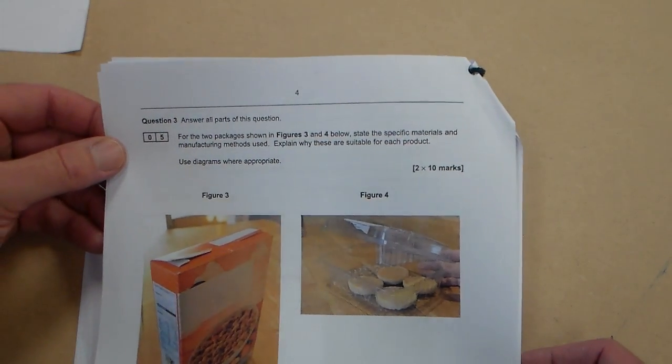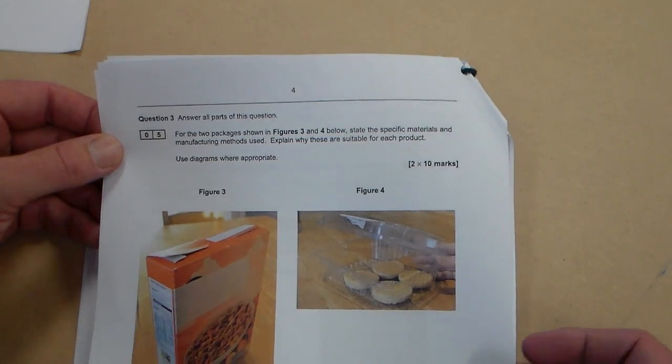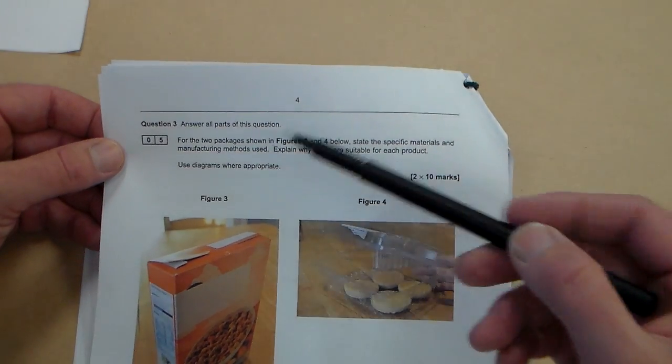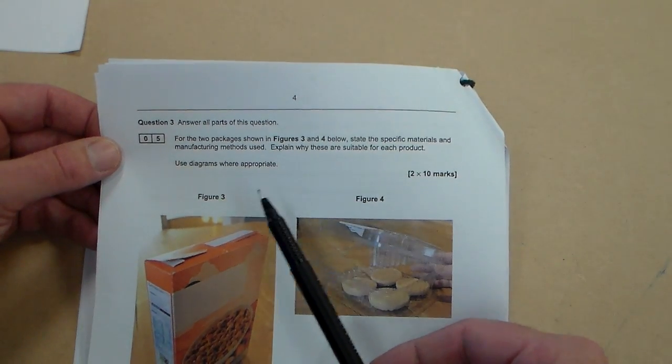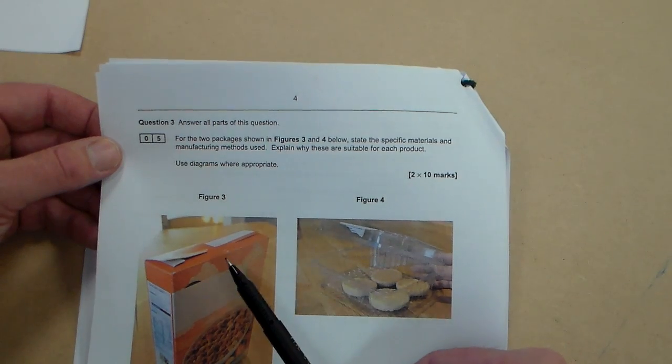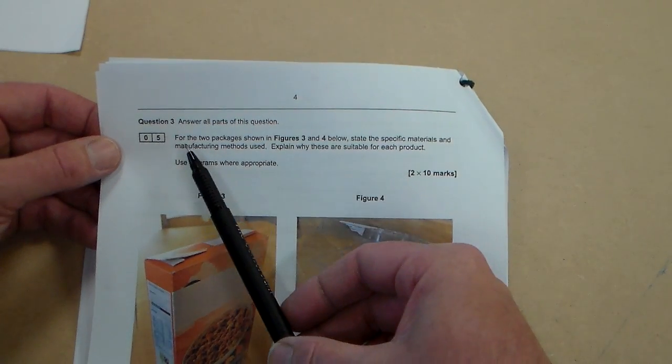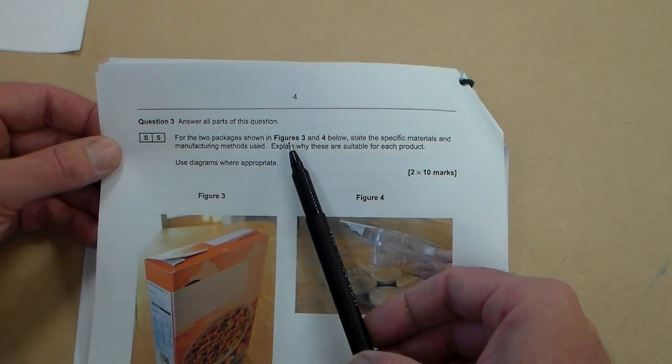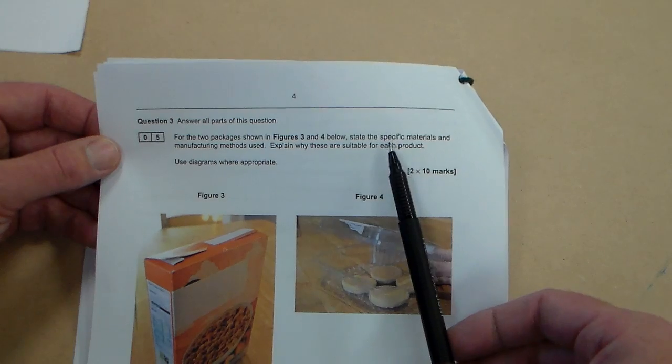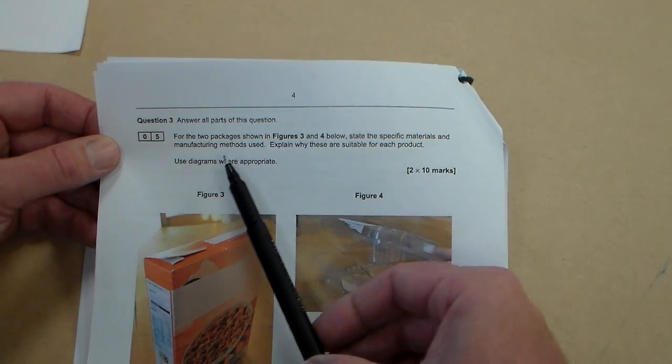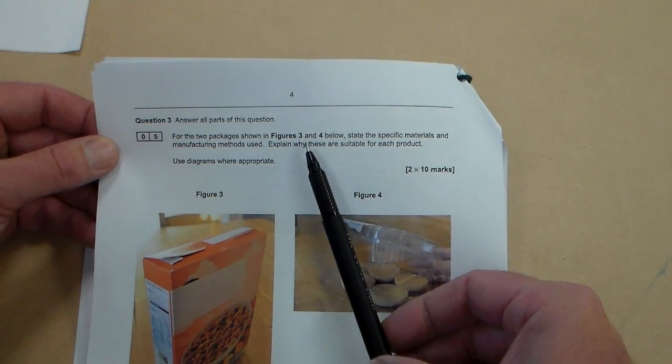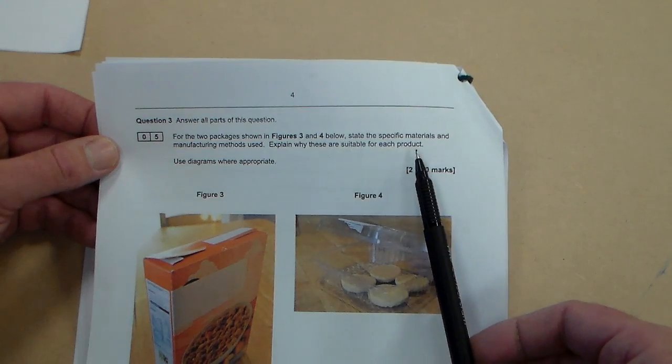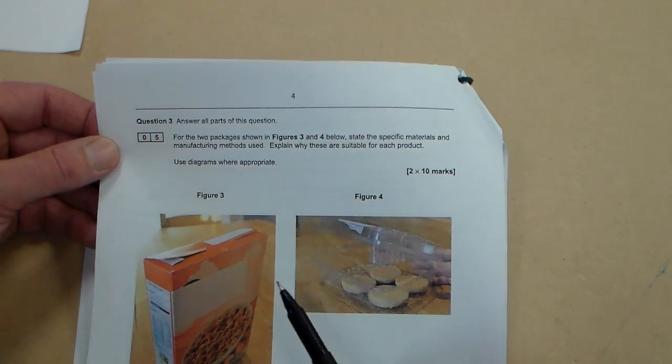Okay, welcome to Mr. Ridley's product design. We're going to look at this question from Prod3. This question is about packaging. It says answer all parts of this question for the two packages shown in figures 3 and 4 below. State the specific materials and the manufacturing methods used. Explain why these are suitable for each product. Use diagrams where appropriate.